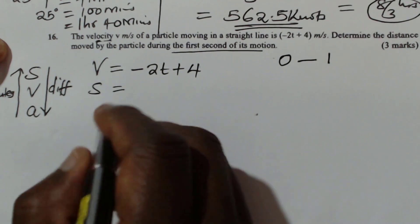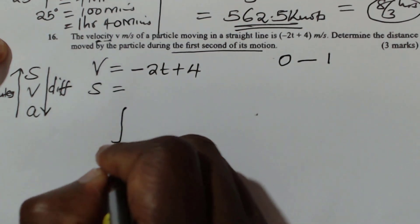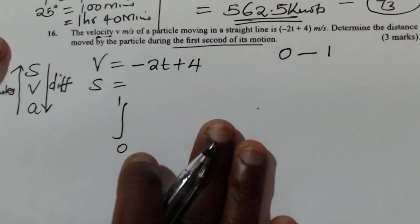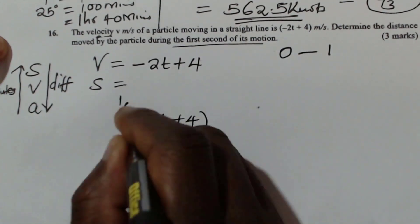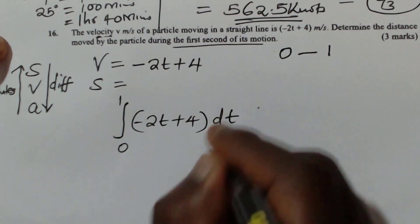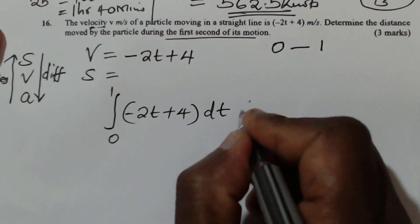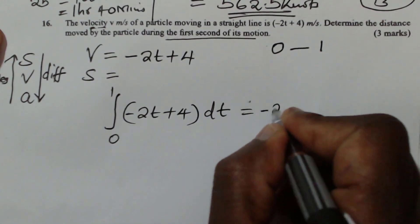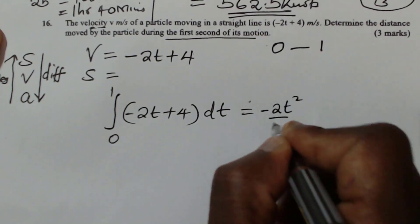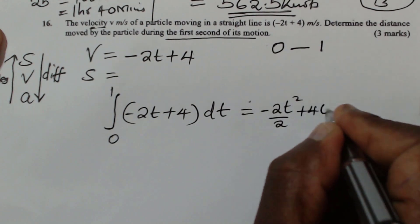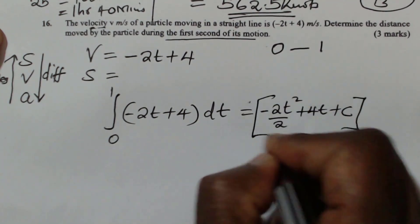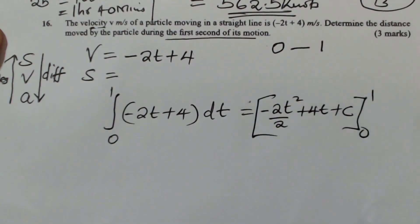So you're going to integrate from 0 to 1 second this expression for velocity, which is negative 2t plus 4 with respect to t. So this will give negative 2t squared divided by 2. Then integrate 4, you get 4t plus the constant.